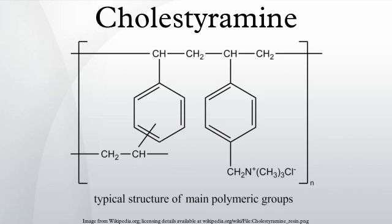The functional group of the anion-exchange resin is a quaternary ammonium group attached to an inert styrene-divinylbenzene copolymer. Cholestyramine removes bile acids from the body by forming insoluble complexes with bile acids in the intestine, which are then excreted in the feces. As a result of this loss of bile acids, more plasma cholesterol is converted to bile acids in the liver to normalize levels, thereby lowering plasma cholesterol levels.